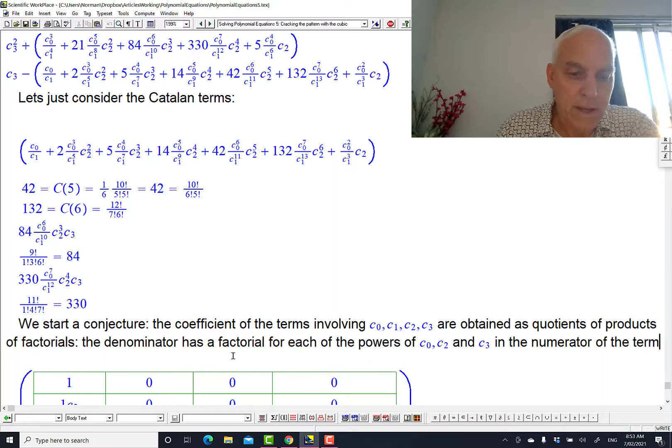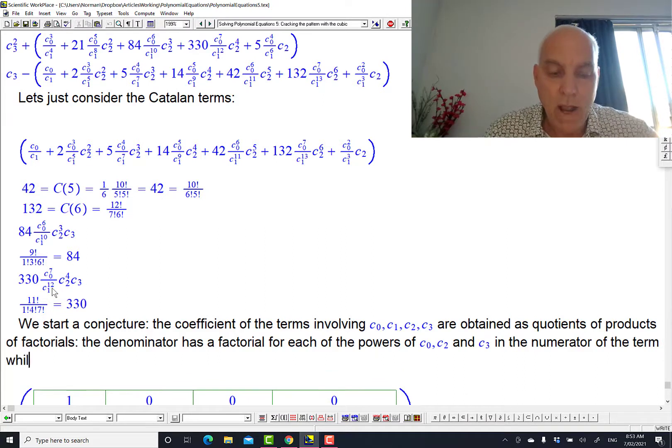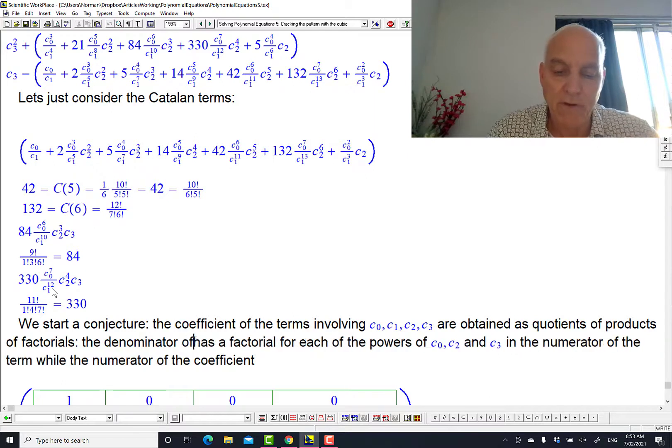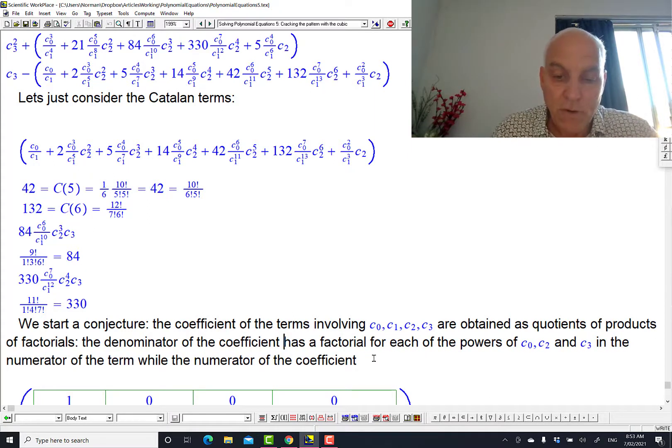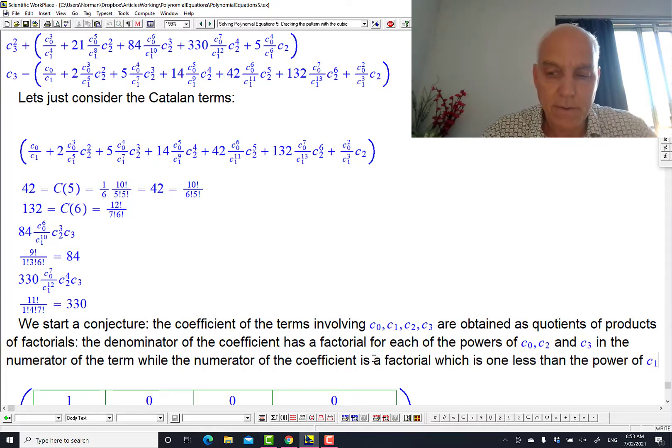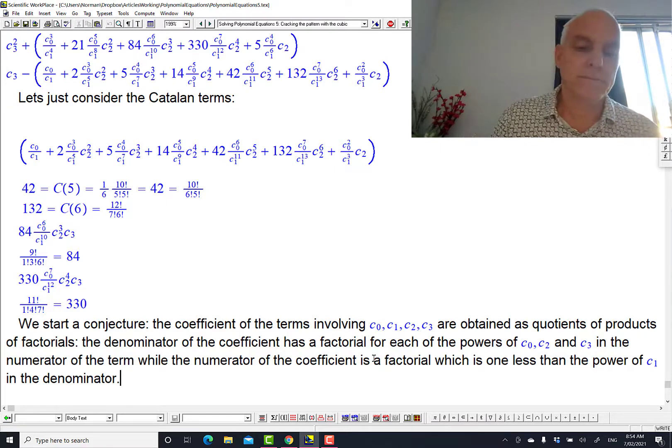So this number that we're getting has a denominator of 1 factorial, 4 factorial, 7 factorial, and that corresponds to the powers of c0, c2, and c3 in the numerator of the term involving the c's. While the numerator of the coefficient, the denominator of the coefficient. And while the numerator of the coefficient is a factorial, which is 1 less than the power of c1 in the denominator. How does that sound? Something like that.